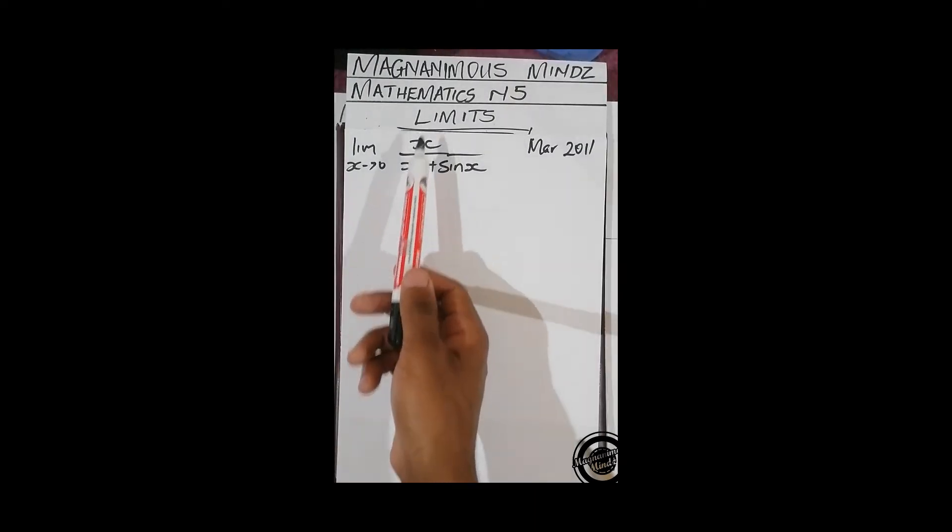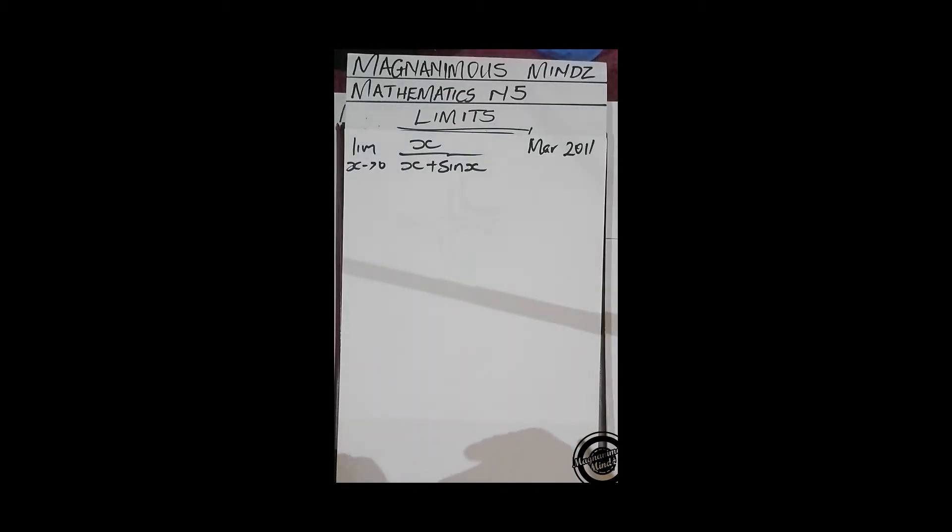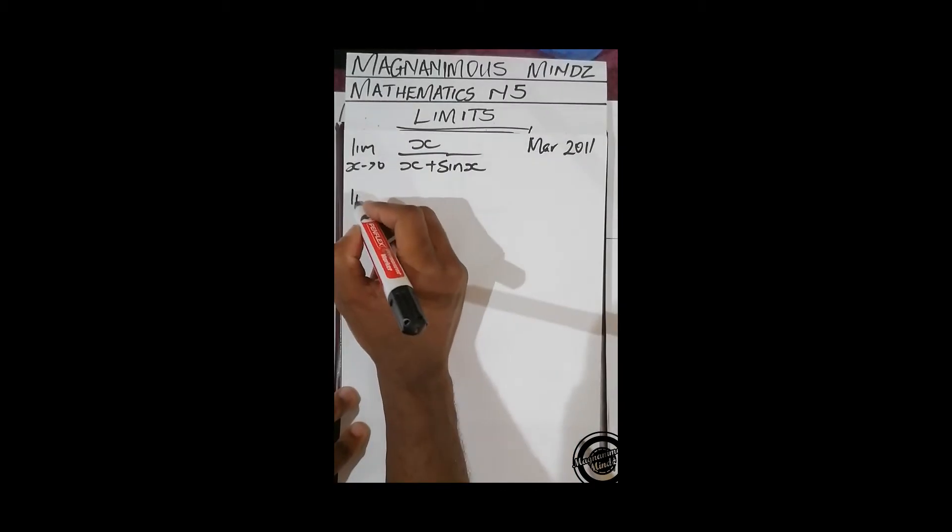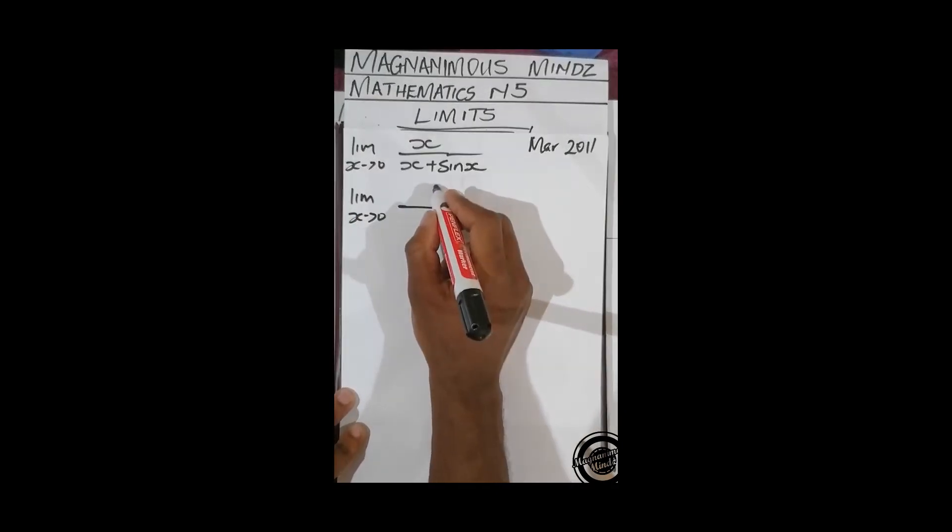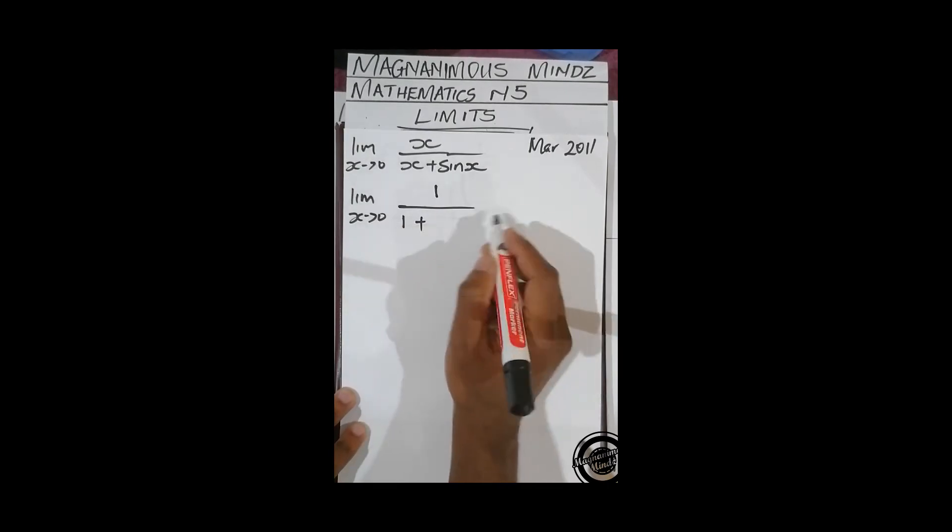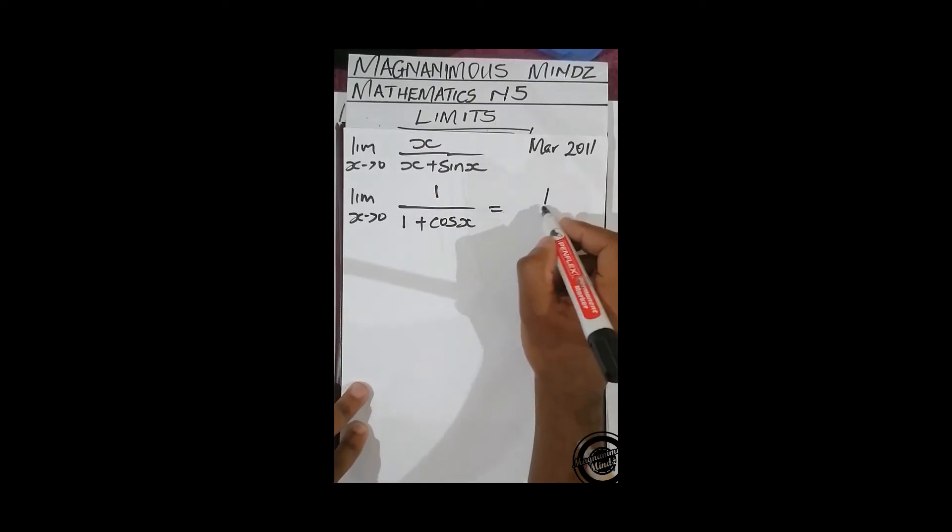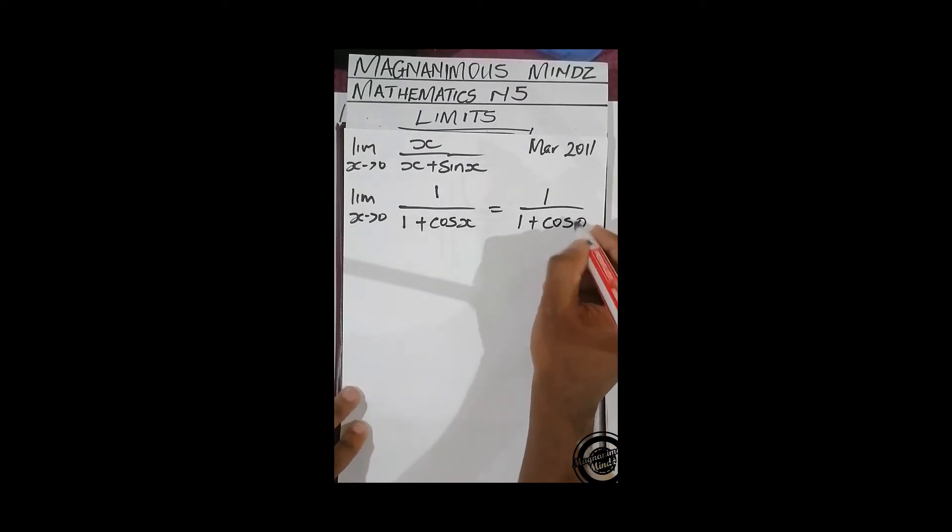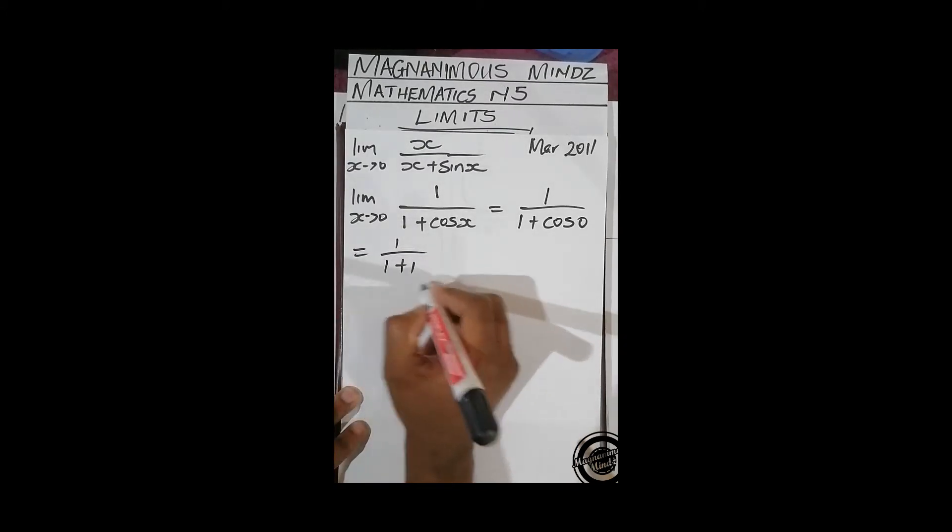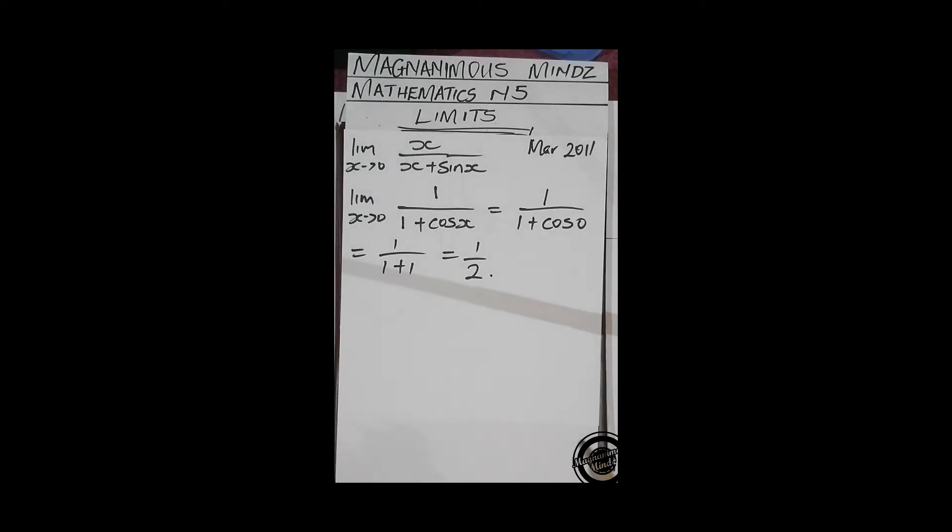So in this case we've got to use L'Hôpital's rule which says we should differentiate and we'll get 1 over 1 plus, if we differentiate this we get cos x. And if we directly substitute in this case, we're going to get 1 over 1 plus cos 0. This is 1 over 1 plus 1, this is 1 over 2.